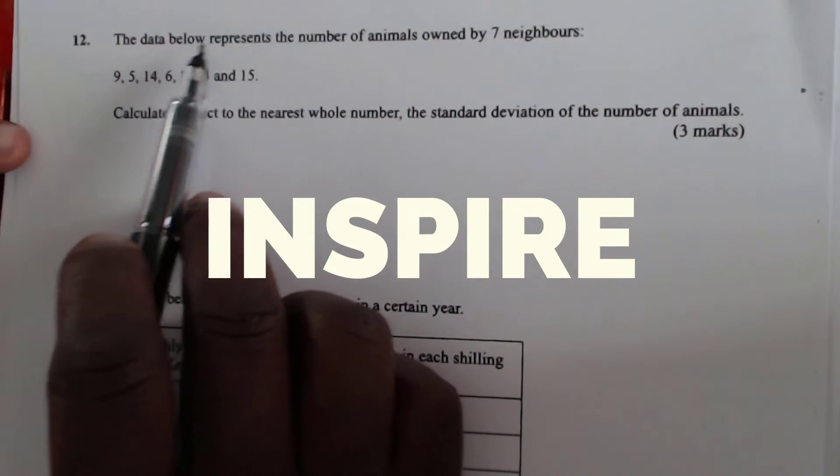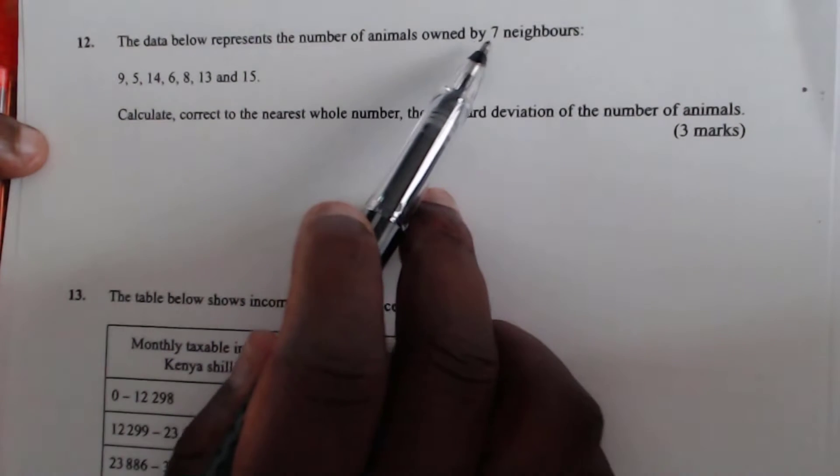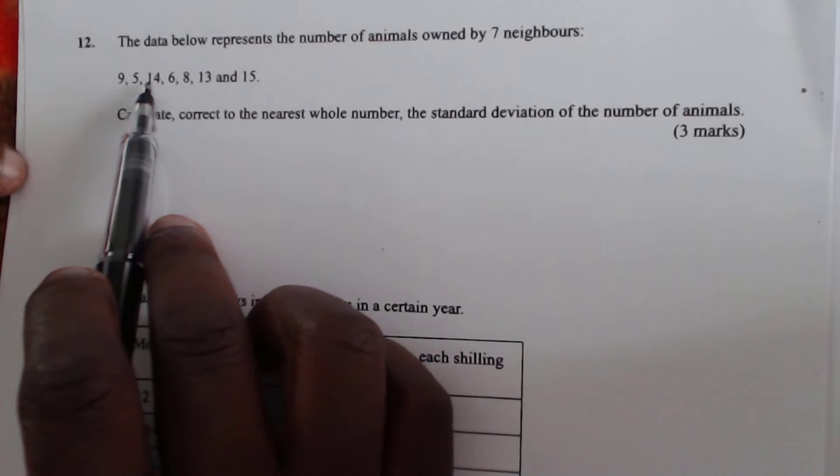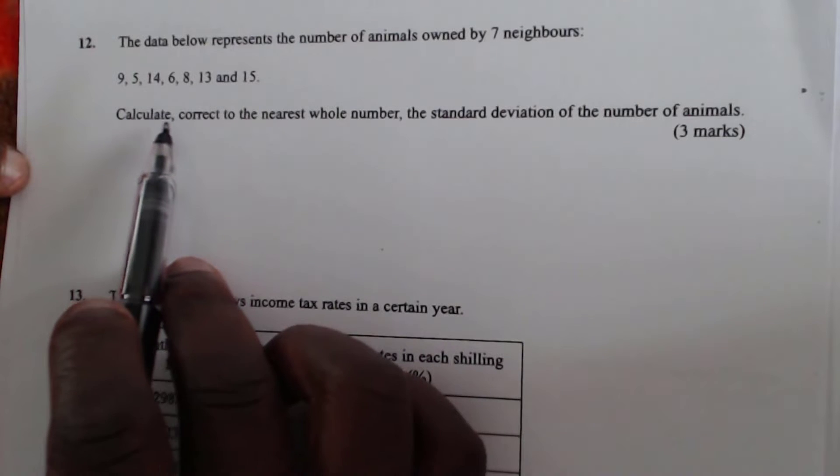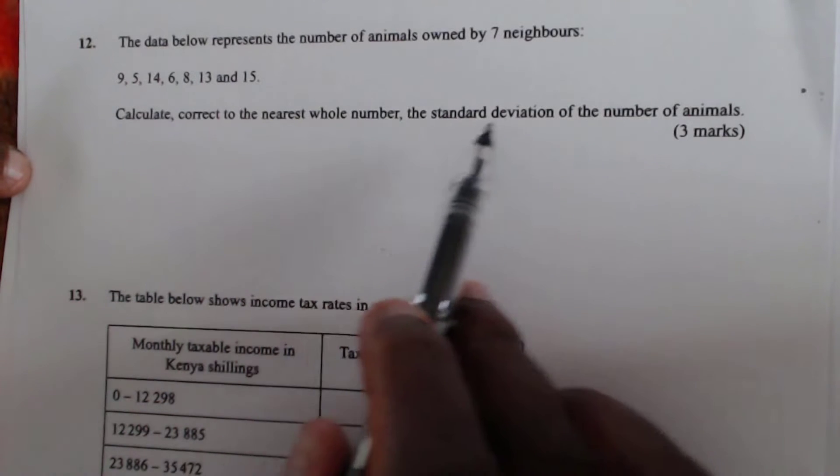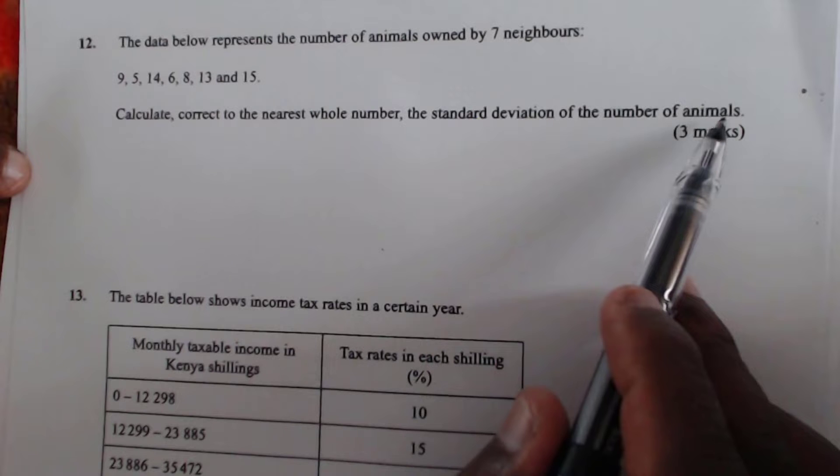Question number 12. The data below represent the number of animals owned by 7 neighbors: 9, 5, 14, 6, 8, 13, and 15. Calculate correct to the nearest whole number, the standard deviation of the number of animals.